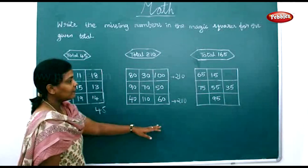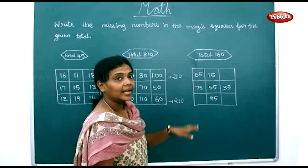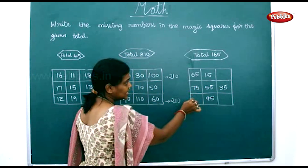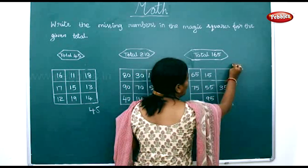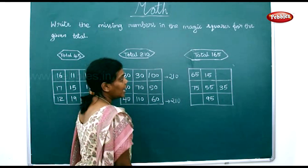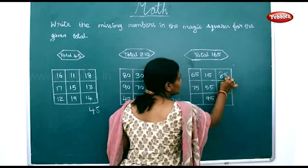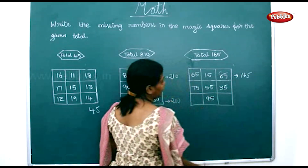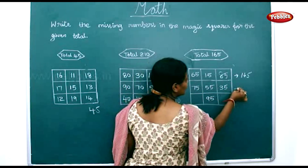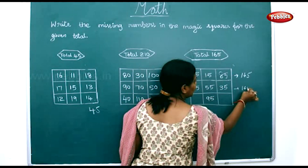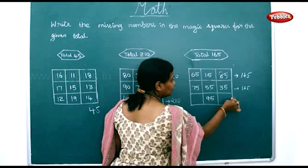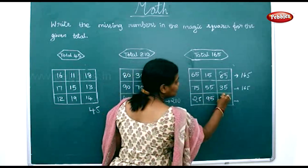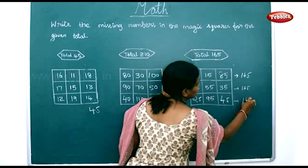In the same way, we're going to find the total for 165. 65 plus 15 gives you 80. Now, 80 plus 85 gives you 165. In the same way, if you add these three you will get 165. You can add 25 here and 45 here to get 165.